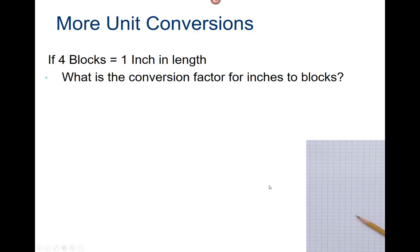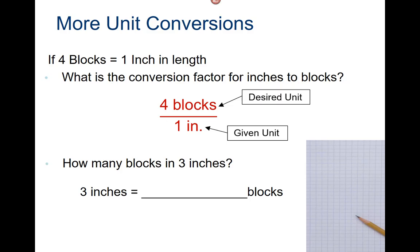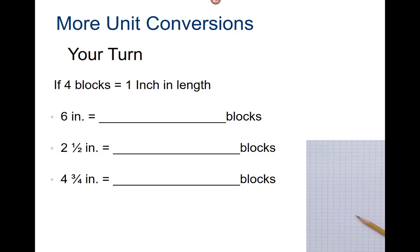More unit conversions. If four blocks on this piece of paper equal one inch, what is the conversion factor for inches to blocks? The conversion factor is four blocks to one inch. The blocks are the desired unit; the inches is the given unit. So how many blocks in three inches? Three inches times four blocks over one inch — cancel the inches — three times four is twelve. It would be twelve blocks.